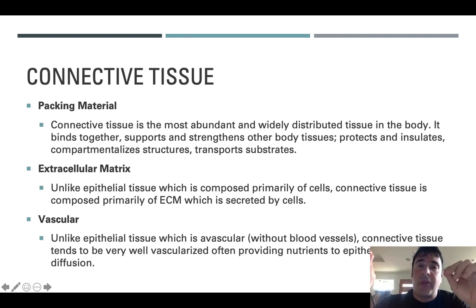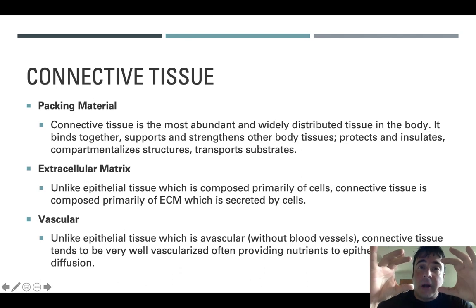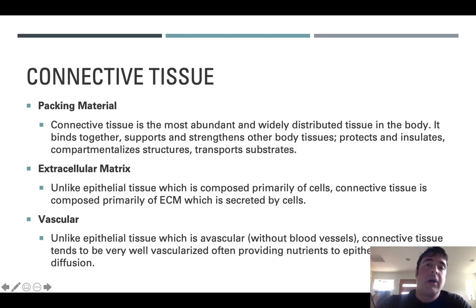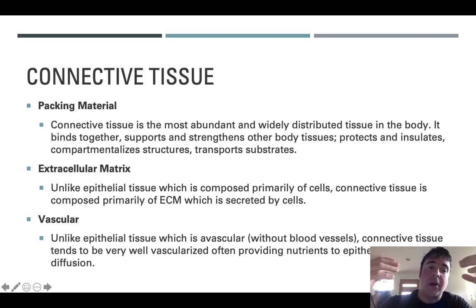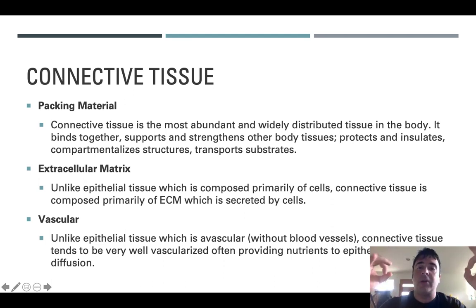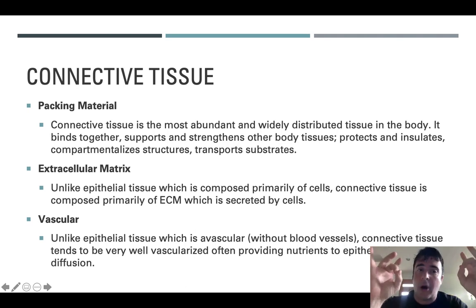Unlike epithelial tissue, which displays cellularity — meaning cells are really close to one another and attach to adjacent cells via junctions — connective tissue doesn't have that pattern. Connective tissue is made up predominantly of what's called extracellular matrix. You have widely spaced cells, and the gap between those cells is filled with the extracellular matrix. It's kind of like fruit jello: the pieces of fruit are like the cells, and the jello is like the extracellular matrix.